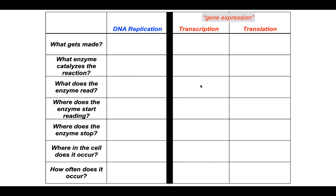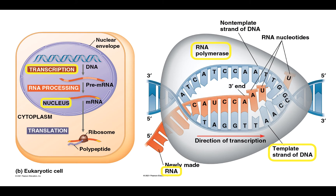We're starting with transcription. As you can see in this figure, transcription takes place within the nucleus of a eukaryotic cell. It is the process by which the enzyme RNA polymerase reads a template — specifically the template strand of DNA. This single blue strand here is the template that RNA polymerase is reading. It is making RNA, shown here in red. This figure already allows you to answer several of the questions about this process.